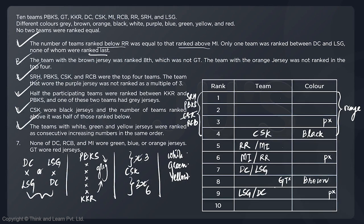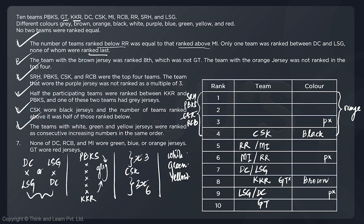Now reviewing all team placements: SRH, PBKS, and RCB take the top three ranks; CSK is fourth; RR or MI take fifth and sixth; DC and LSG take seventh and ninth in some order. That leaves GT and KKR for ranks eight and ten. Since rank eight cannot be GT (from statement two), KKR goes to rank eight and GT goes to rank ten. Statement seven confirms GT wore a red jersey, so rank ten gets red.